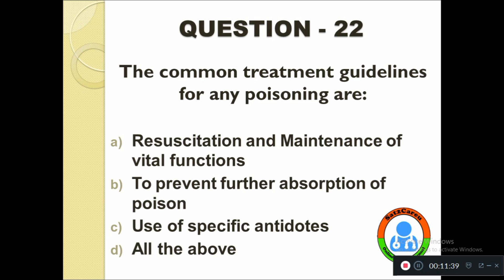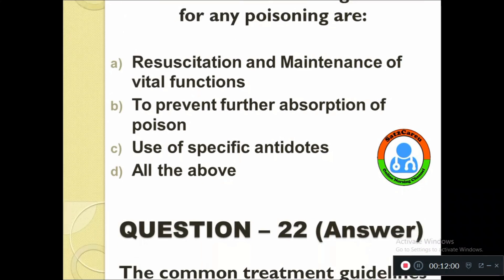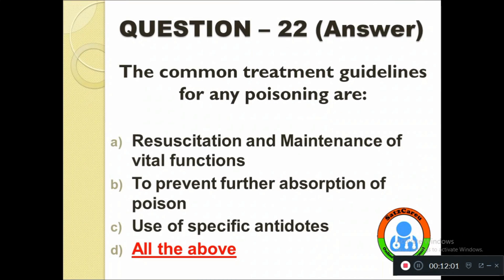Question number twenty-two: The common treatment guidelines for any poisonings are — option A: Resuscitation and maintenance of vital functions, B: To prevent further absorption of poison, C: Use of specific antidotes, D: All of the above. The correct answer is all of the above.